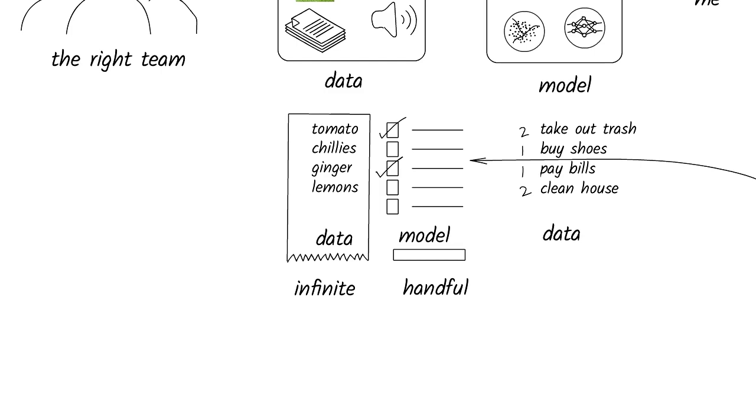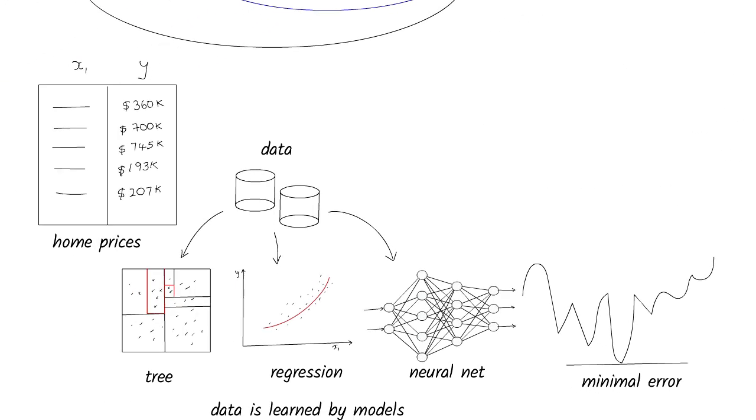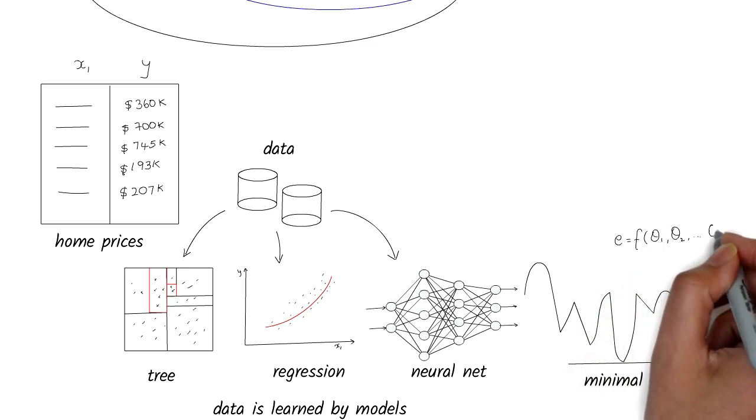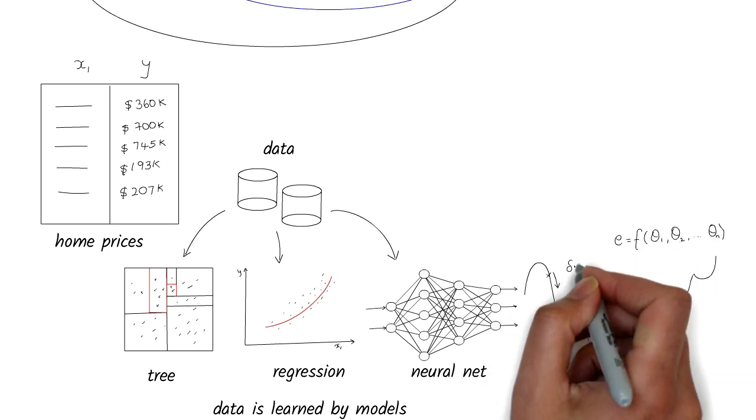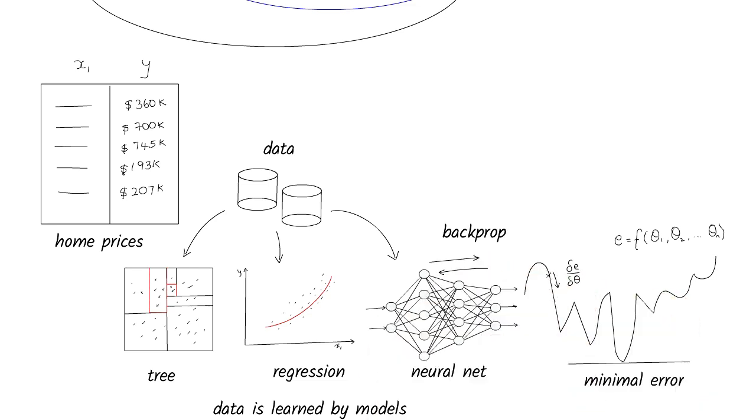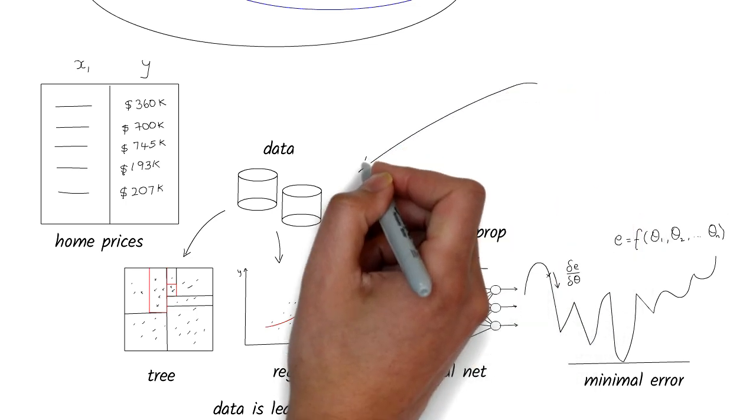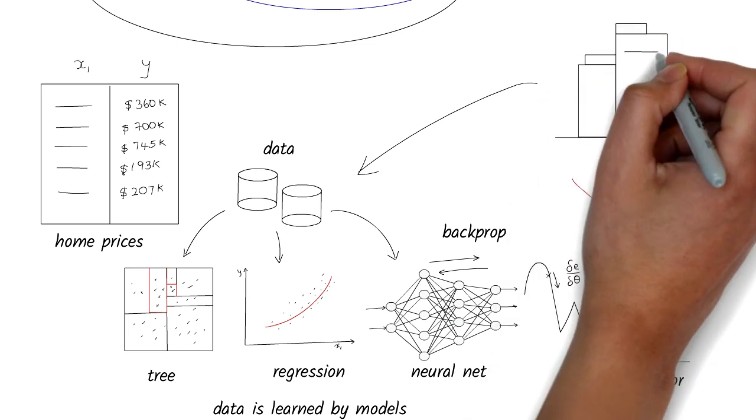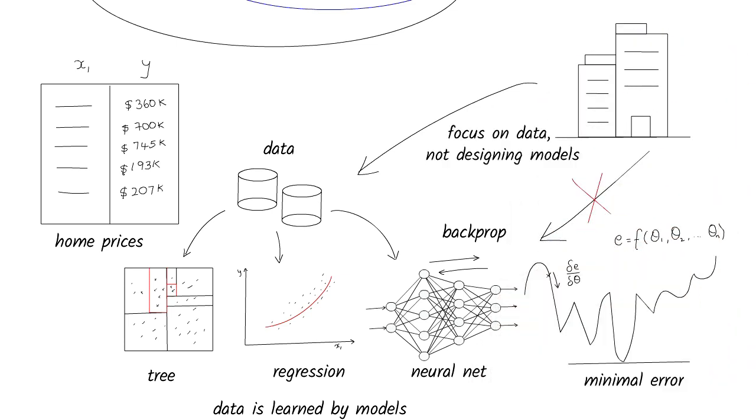People who create new machine learning models will need to understand things like how to define error functions, how to traverse the parameter space, say with gradient descent, and how to design or modify complex learning algorithms like the back propagation used in neural networks. Most companies will not be designing new machine learning models. Rather, they need to understand their data so that they can pick the right model and use it in the right way.